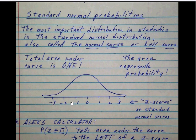This 0 in the middle is the mean of the distribution, and these numbers here, 1, 2, 3, are actual numbers of standard deviations. So in the standard normal distribution, the mean is 0, the standard deviation is 1.